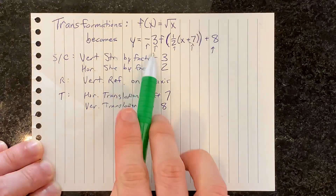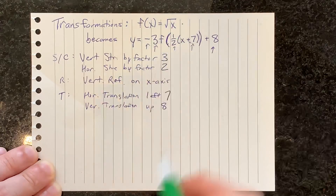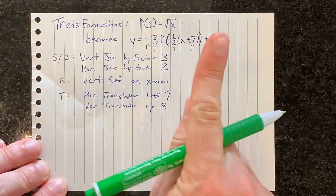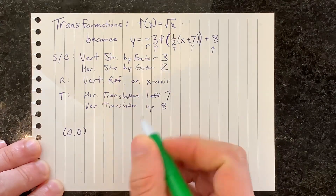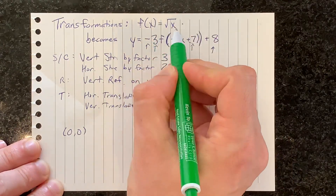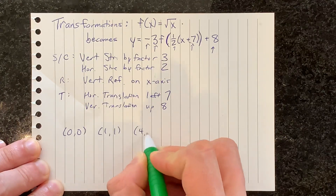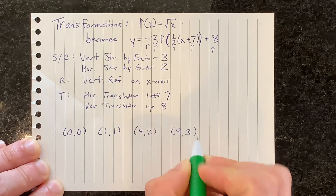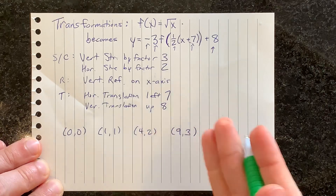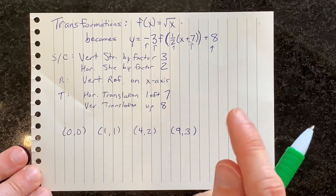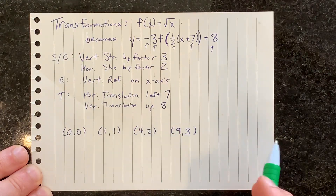How do you actually apply each of these transformations to the original function y equals the square root of x? One option is to start with the original points of the square root function — you're probably supposed to have memorized that: (0, 0), (1, 1), (4, 2), and (9, 3). Note that the y-coordinate of each of these points is the square root of each of the x's. Then, one by one, we apply these transformations to create new points.